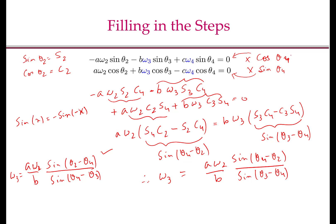The expression for omega 4 can be derived in a similar fashion. Multiply the first equation by cos θ3 and the second equation by sin θ3, then add to eliminate omega 3. The steps are left as an exercise.